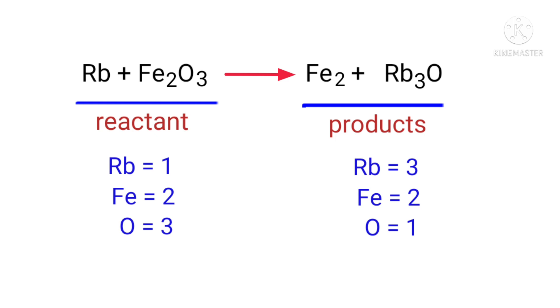On the reactants side, there are one rubidium atom, two iron atoms, and three oxygen atoms present. On the products side, there are three rubidium atoms, two iron atoms, and one oxygen atom present. The number of atoms are not balanced on both sides.